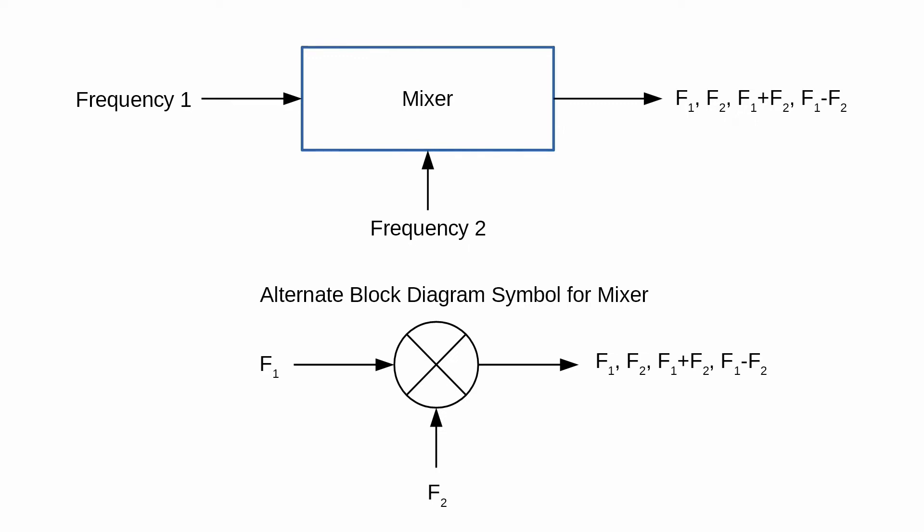A radio mixer is a device that multiplies two signals together to create two new frequencies. If the inputs are frequency 1 and frequency 2, the output consists of the original signals, plus the sum of the frequencies 1 and 2, and the difference. While this sounds like a really complicated thing to do, it turns out to be quite simple.